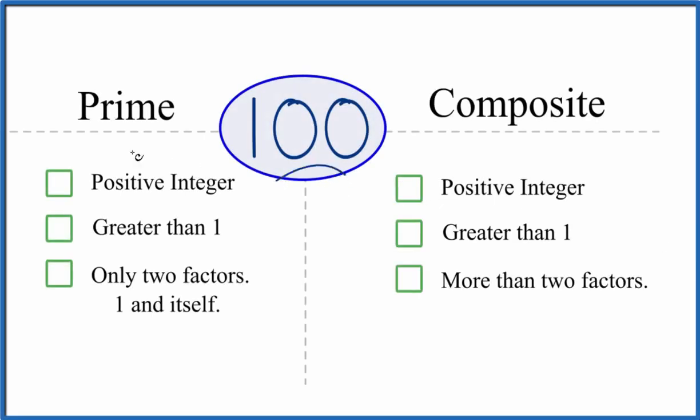The question is whether 100 is a prime number or a composite number. So how do you tell? Let's look first if 100 is prime.